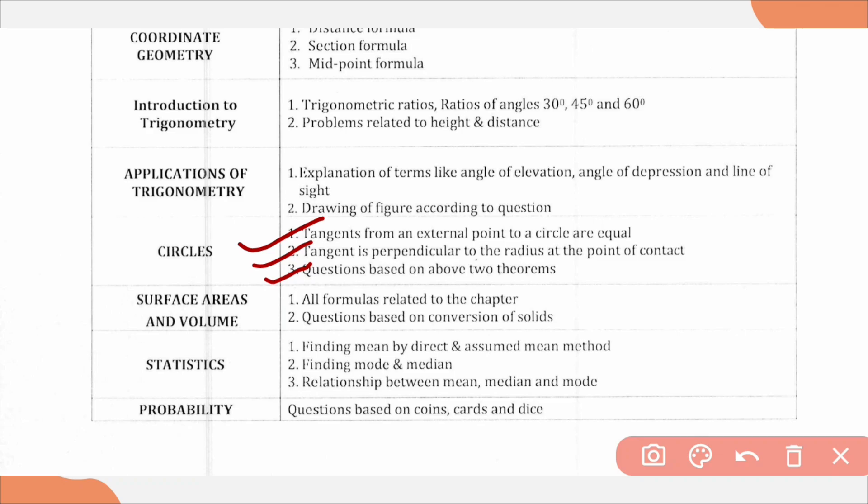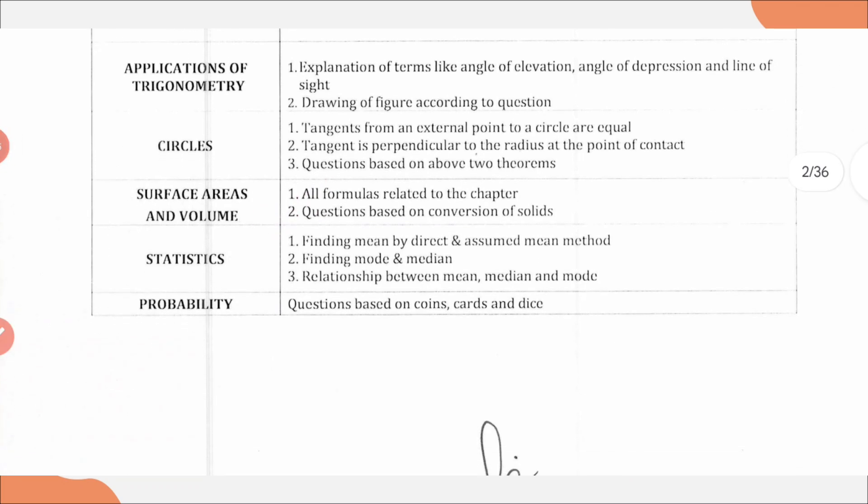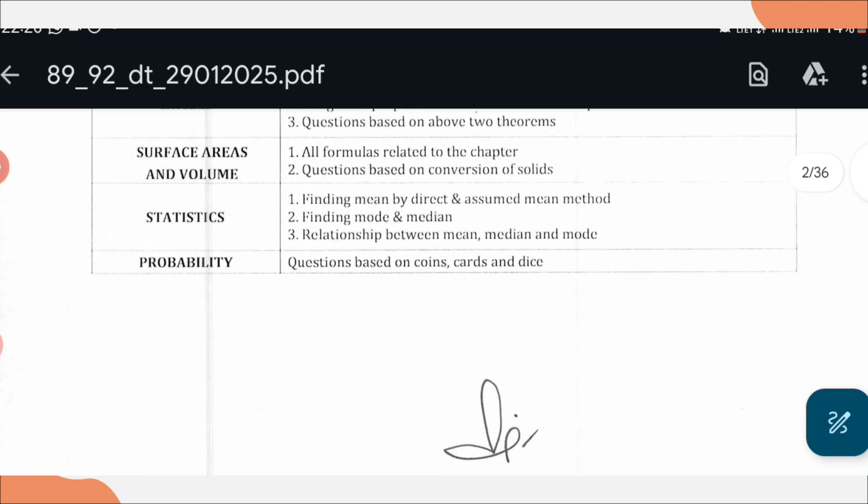From Surface Area and Volume: all formulas related to chapter and questions based on conversion of solids. From Statistics: finding mean by direct and assumed mean method, finding mode and median, and relationship between mean, median, and mode.